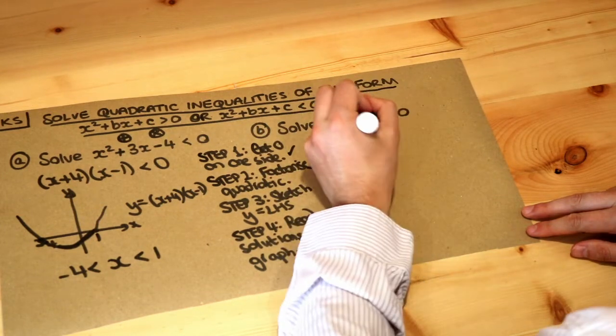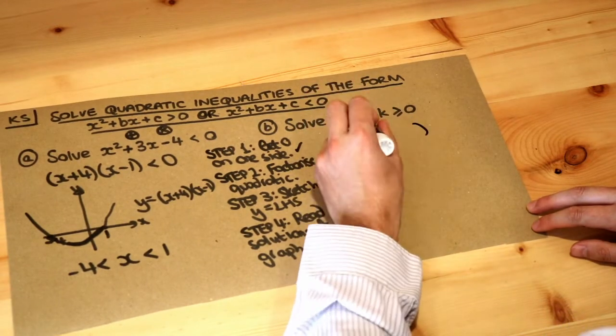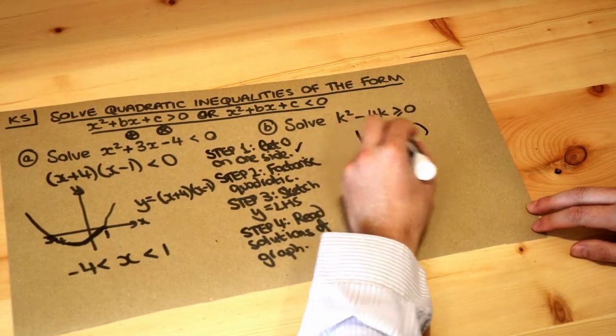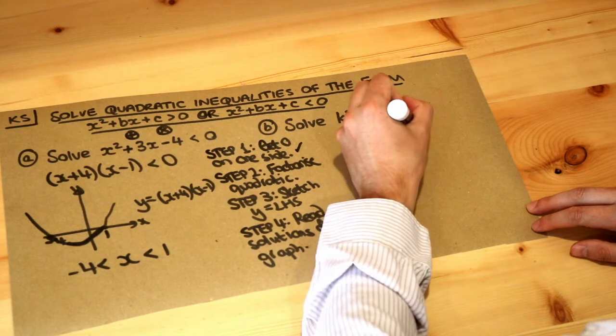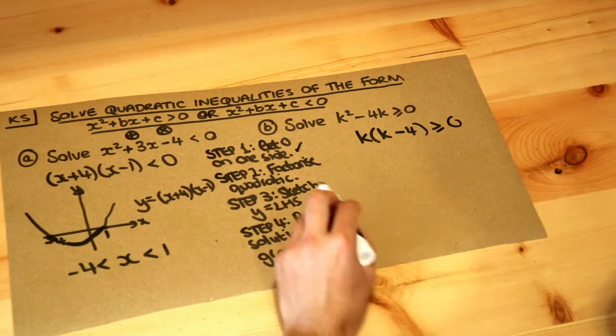So this is a single bracket factorisation, not a double bracket factorisation like over here. Now k times what is k squared? It's k. And k times what is minus four k? It's minus four. The greater or equal to zero. So we've done step two.